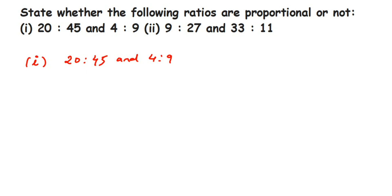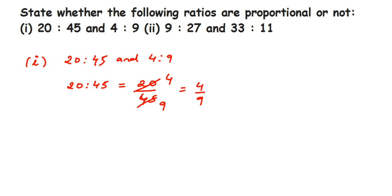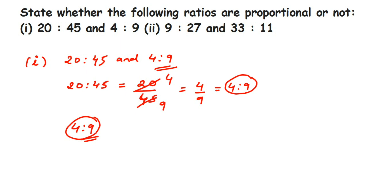The easy method is to bring the ratios to the lowest or reduced form — cancel the numbers until you cannot cancel further. For 20 is to 45, written as 20/45, we cancel using the 5 table: 5 fours are 20 and 5 nines are 45, giving us 4/9, or 4 is to 9. The second ratio is also 4 is to 9. Since both reduce to 4 is to 9, they are equal, so 20 is to 45 and 4 is to 9 are proportional.